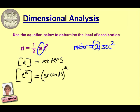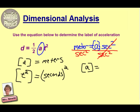So now it's just an algebra problem to get acceleration by itself. To get acceleration by itself, we want to divide by seconds squared. Whatever we do on one side of the problem, we have to do on the other side of the problem. The seconds squared is now canceled out over here, and we're left with our final answer. The label for acceleration is simply meters divided by seconds squared, or meters per second squared.